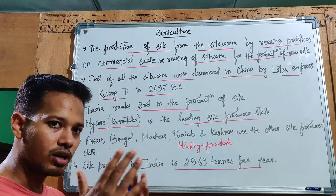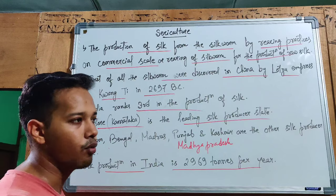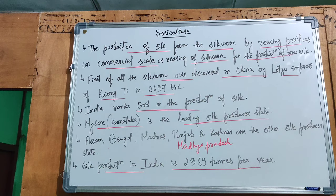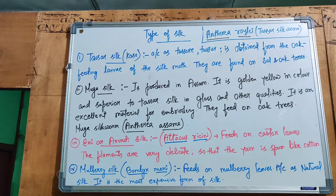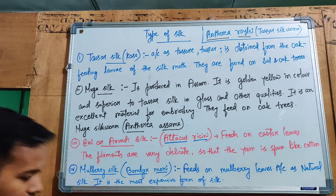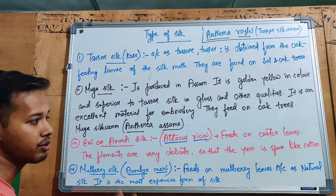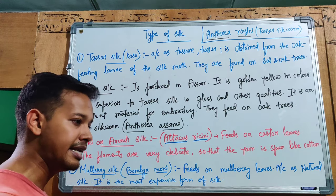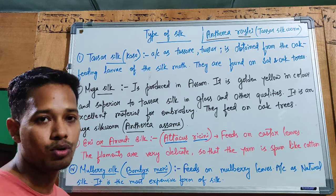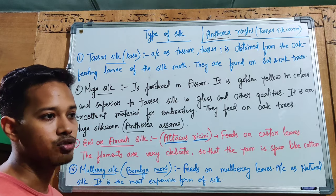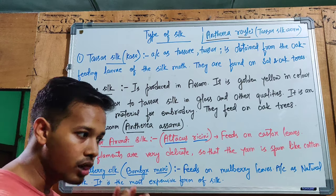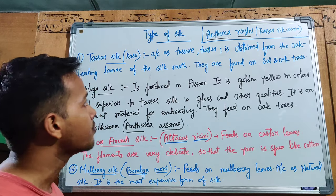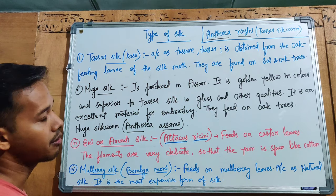Now we will look into the types of silk. We get four types of silk. India is the only country where all four types of silk can be found and cultivated. In other countries that produce silk, all four types cannot be cultivated due to environmental conditions, but in India it is possible.